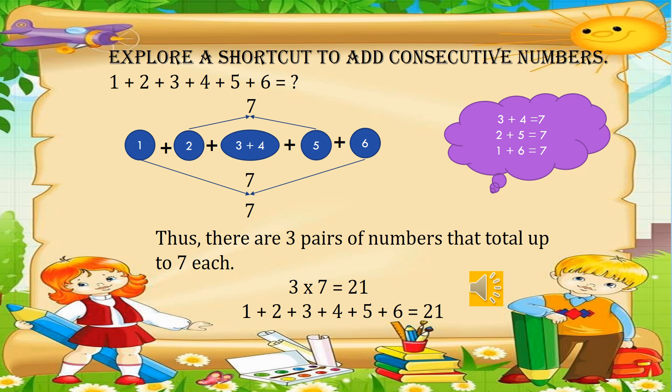Explore a shortcut to add consecutive numbers. The question is: 1+2+3+4+5+6 equals? We pair the middle numbers: 3 plus 4 gives 7. Then the next pair: 2 plus 5 gives 7. Finally, 1 plus 6 also gives 7. There are 3 pairs that each total 7, so 3 times 7 equals 21. Therefore, 1+2+3+4+5+6 equals 21.